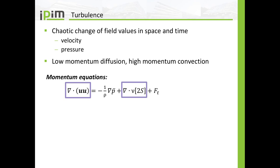If you think of the Reynolds number: it is given by the velocity multiplied by a characteristic length scale divided by your kinematic viscosity. So if you have a low momentum diffusion — meaning your viscosity is low — and a high momentum convection, meaning your velocity is high, then you will have a high Reynolds number. If you have low velocities and high viscosity, your Reynolds number will be low. For high Reynolds number, we have turbulent flow; for low Reynolds number, we have laminar flow.